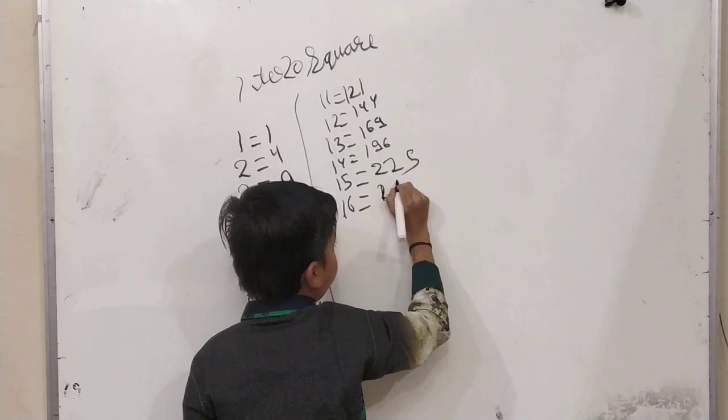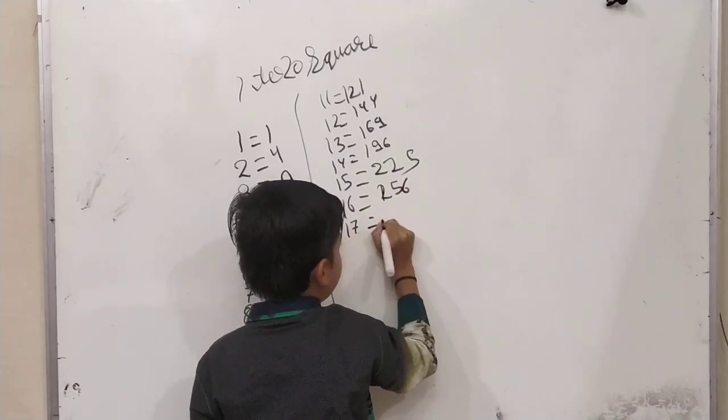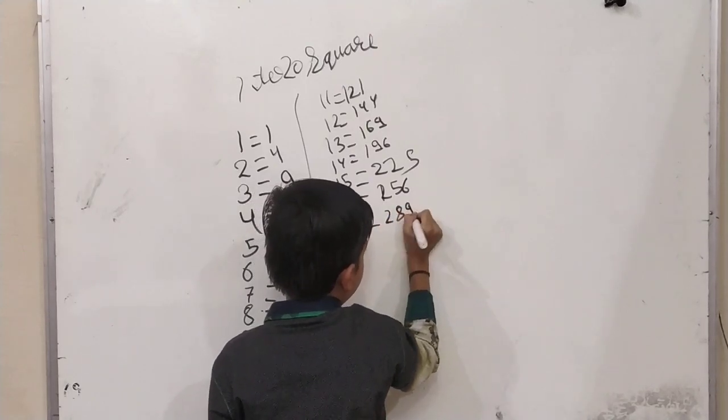Seventeen squared, two eighty-nine. Eighteen squared, three twenty-four.